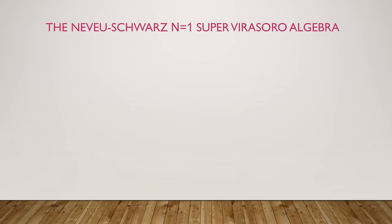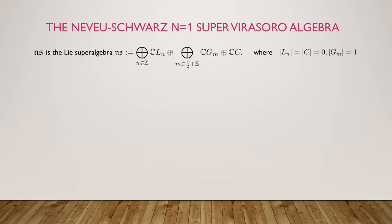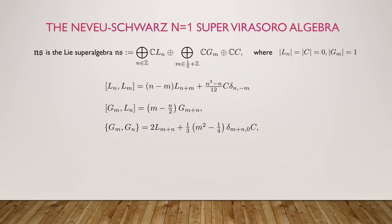The N equals 1 super Virasoro algebra is a Lie superalgebra with infinitely many generators. C is central, the L_n's are even and actually give a copy of the Virasoro algebra, and the G_m's are odd. They satisfy commutator relations for the even elements and anti-commutator relations for the odd elements, and C is central.